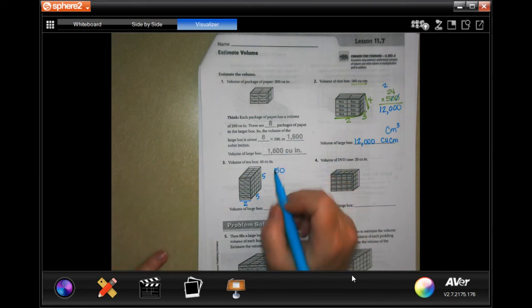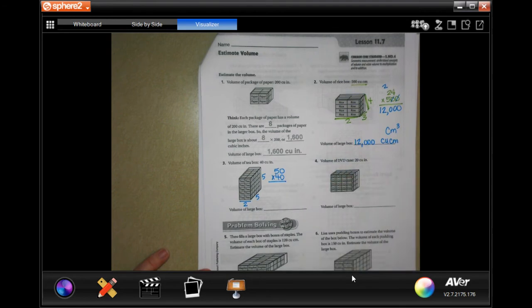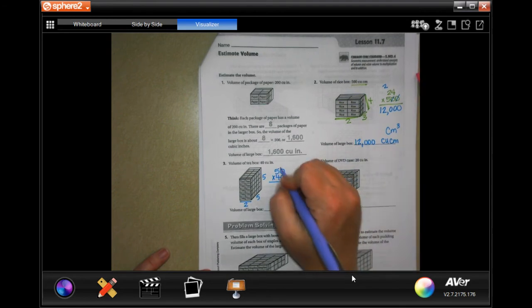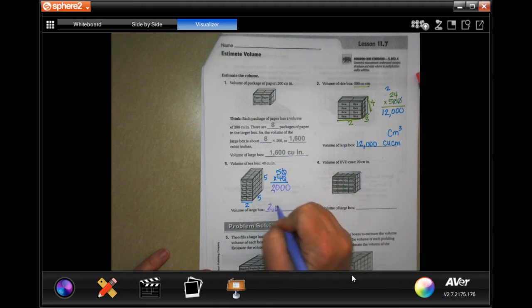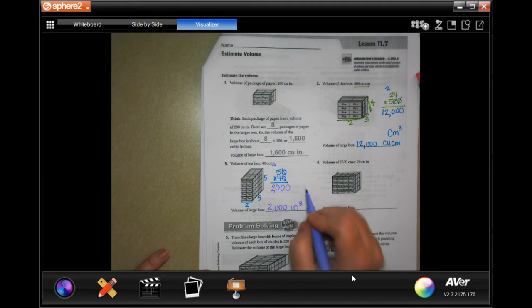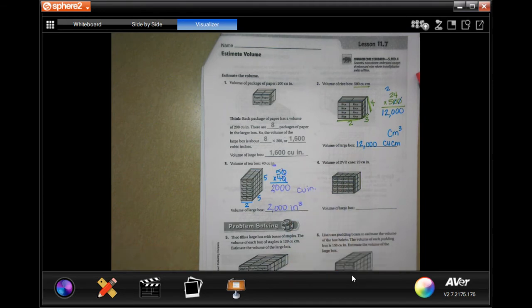Now, each one of those is 40. So we need to multiply those. I'm going to take off the two zeros and put them at the end. Four times five is 20, so 2,000. And it's in inches, so I'm going to put inches cubed. You can put cubic inches if you want to. It doesn't change anything. It's the same answer.